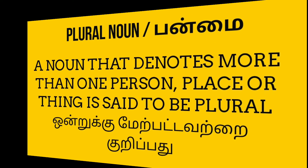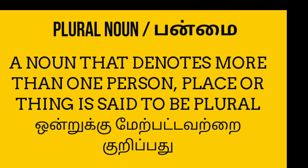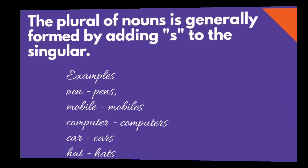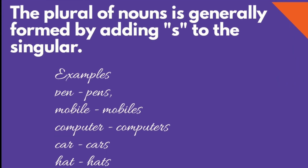Next is plural nouns. A noun that denotes more than one person, place or thing is said to be a plural noun. For singular nouns, if you add S, it will be formed into a plural. But not in all words can we simply add S — plural can be formed in different ways.